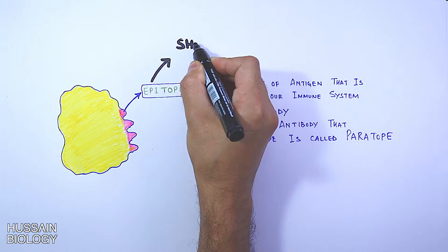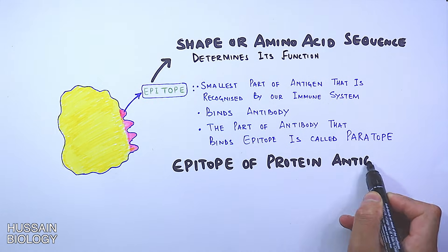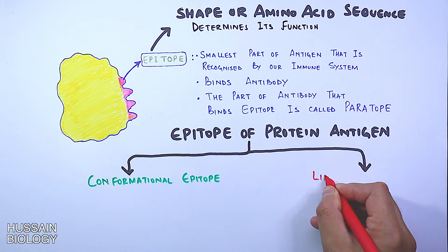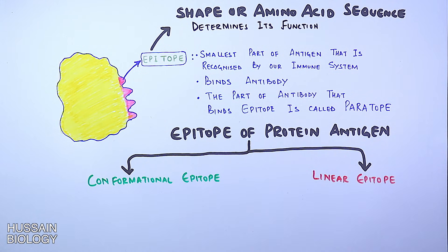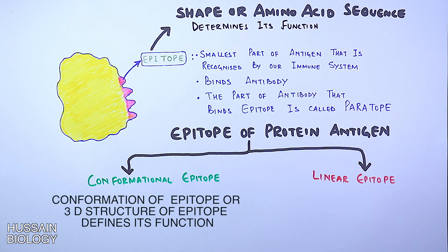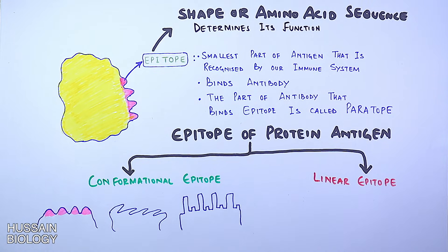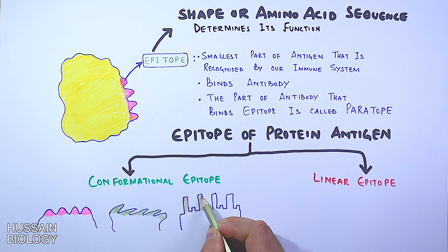Moving further, we classify the epitopes of protein antigens into two classes: conformational epitopes and linear epitopes. The conformational epitope functions due to its structure and shape — the 3D structure of the epitope defines its function. Conformational epitopes have a vast majority of structures which are recognized by our immune system through their specific paratopes. In these diagrams we see all the epitopes have different conformational structures which define their function.